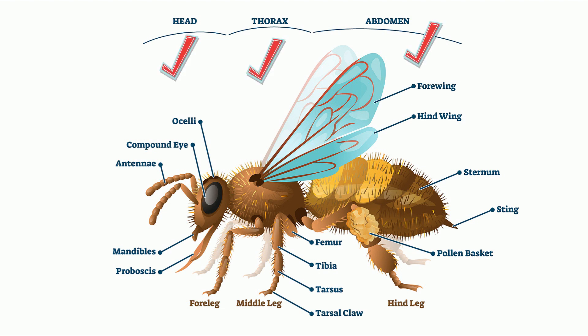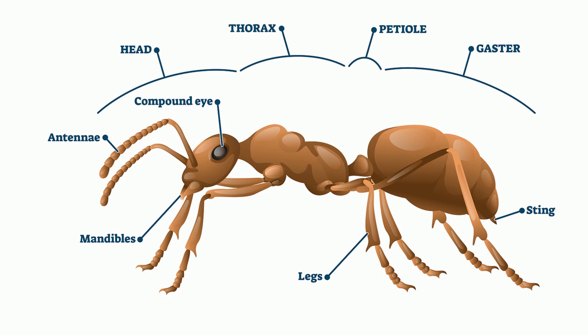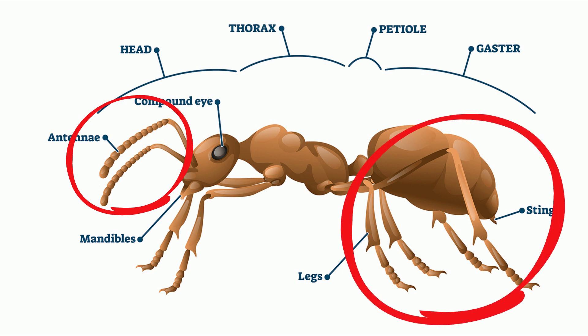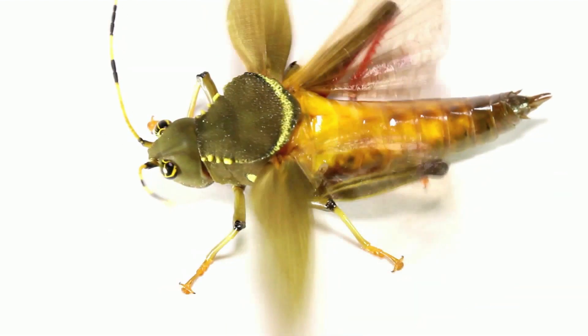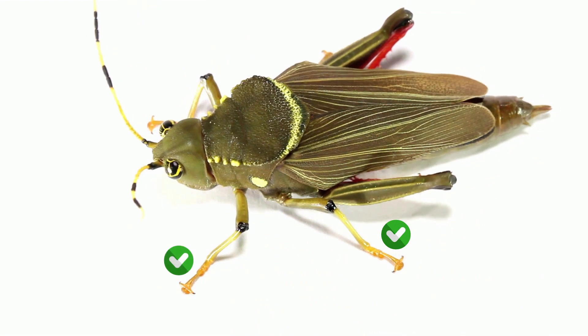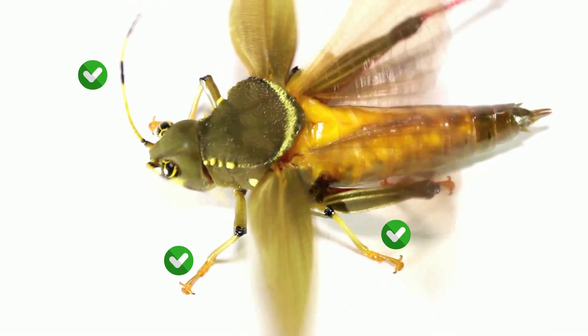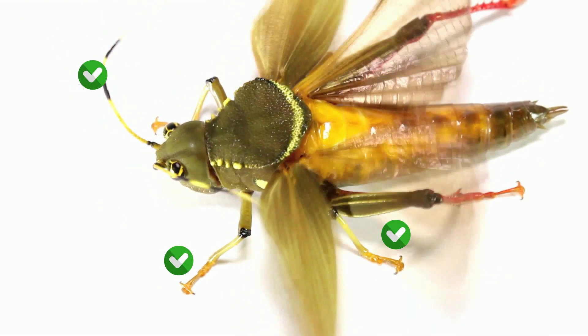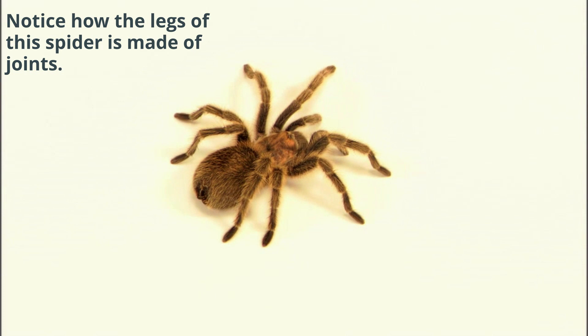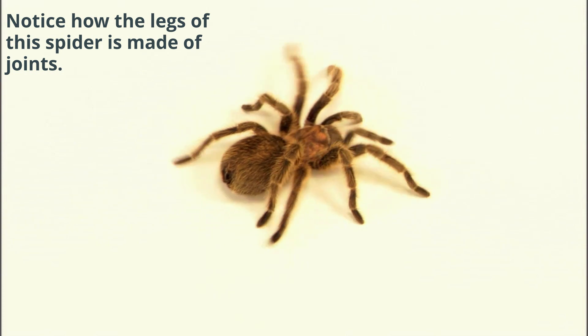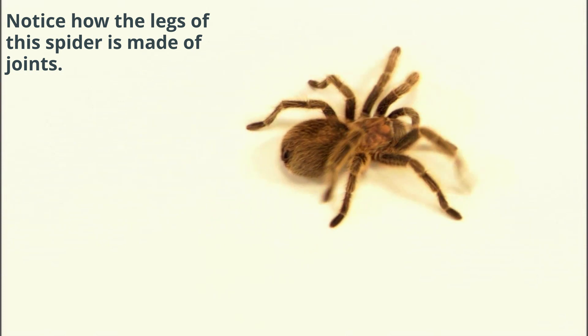Segmented appendages. So, what's an appendage? An appendage is a portion of an arthropod that sticks out from its body and has a function. Examples of appendages include legs, arms, and antennae. The appendages of arthropods are also made of joints. A joint is the location where two parts meet.